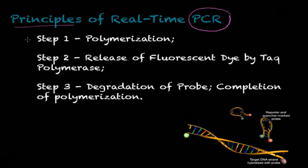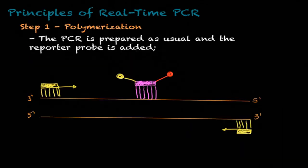The first step of real-time PCR is going to be polymerization. The second step is going to be release of fluorescent dye by TAC polymerase. And the final and third step is going to be degradation of probe and then completion of polymerization.